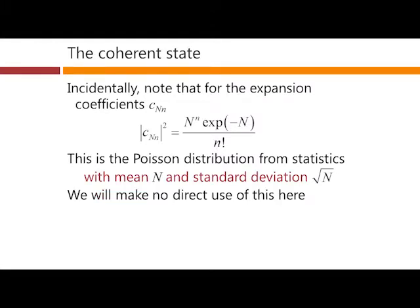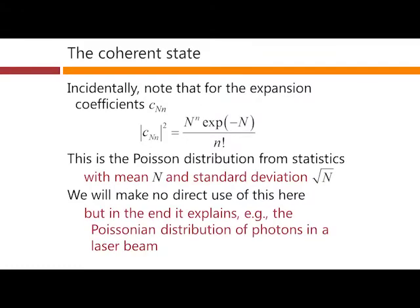So we are going to make no direct use of the fact that these happen to be the Poisson distribution coefficients, these modulus squared. We're not going to use that here, but I just point it out. And in the end, for example, it does explain why when we're looking at, say, a laser beam, which does happen to be in its ideal form in a coherent state, the distribution of the arrival of the number of photons in a laser beam is something that obeys this distribution.